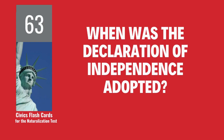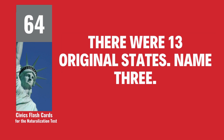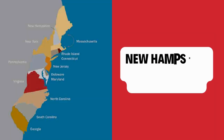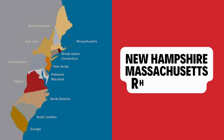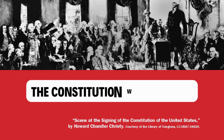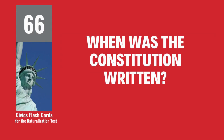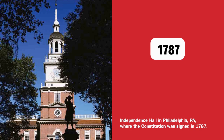When was the Declaration of Independence adopted? July 4, 1776. There were 13 original states. Name 3. New Hampshire. Massachusetts. Rhode Island. What happened at the Constitutional Convention? The Constitution was written. When was the Constitution written? 1787.